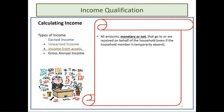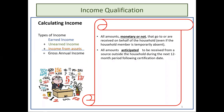When calculating income, all amounts — whether monetary or not — that go into or are received on behalf of the household are considered income. A non-monetary example would be a household's car payment being made every month by somebody outside the household. All amounts anticipated to be received from sources outside the household during the next 12 months are to be calculated as known income.